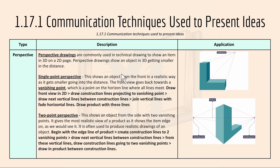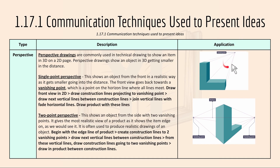Then we have perspective drawing. These are commonly used in technical drawing to show an item in 3D on a 2D page, and they show an object in 3D getting smaller in the distance. In design technology we focus on two types: single-point perspective and two-point perspective. Single-point perspective shows an object from the front in a realistic way as it gets smaller into the distance, converging towards a single vanishing point. To draw it: draw a front view, draw construction lines projecting to the vanishing point, then draw vertical lines between the construction lines and draw your product within these lines.